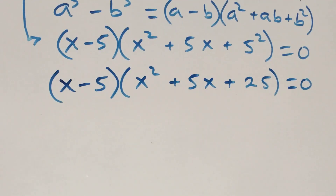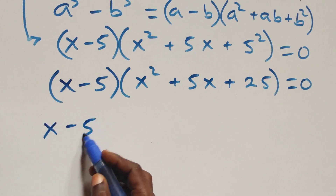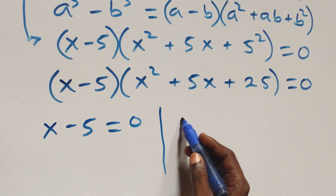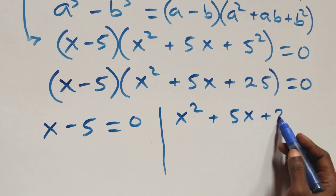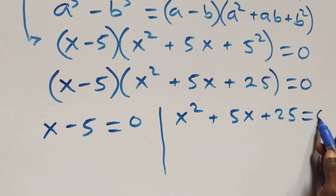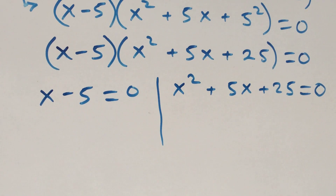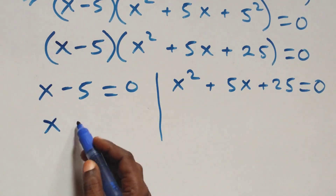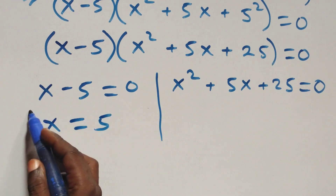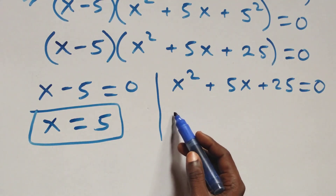Then next step, we have also two possible cases here. x minus 5 equals to 0, which gives x equals to 5, a real solution. And here we also have a quadratic equation.